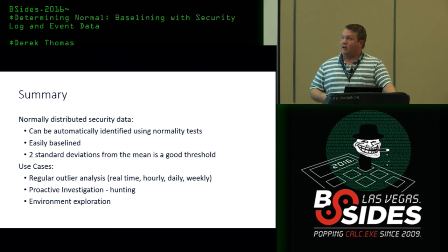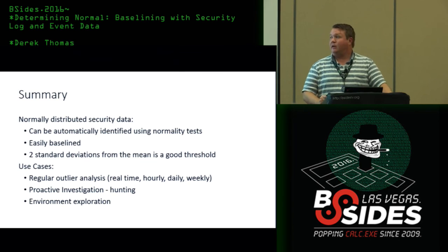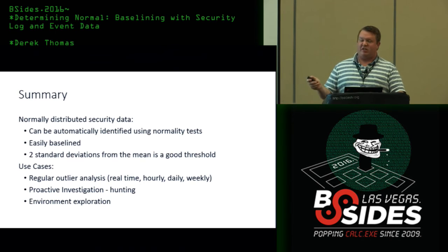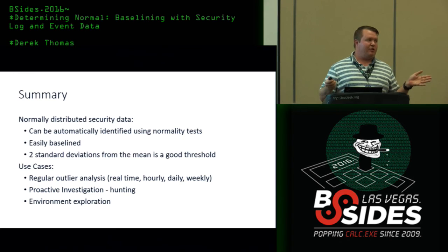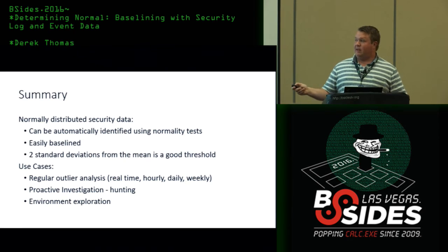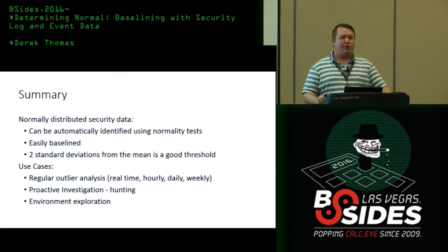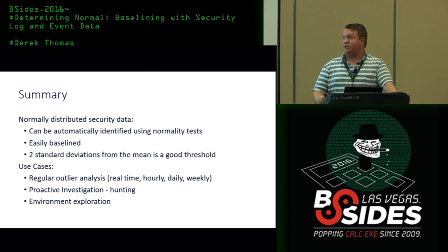Summary: identify the data, make sure it's normally distributed, and use two standard deviations as the baseline. The high-level use case categories include regular outlier detection — if you're managing these thresholds in your SIM, that falls into that category — proactive investigation and hunting to see if there's funny activity in a network, and general environment exploration when you're new to a company and want to figure out what's normal and what rules make sense.